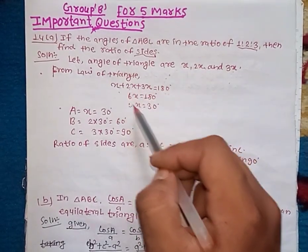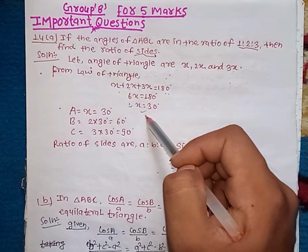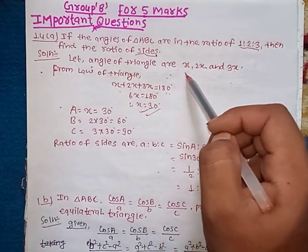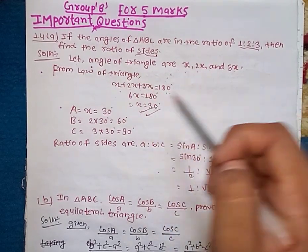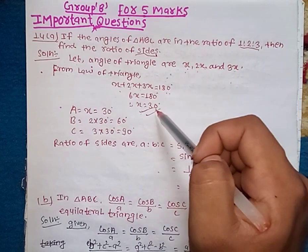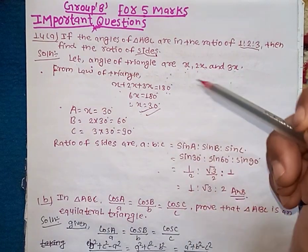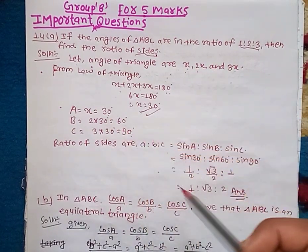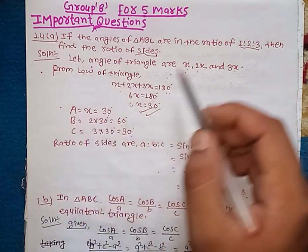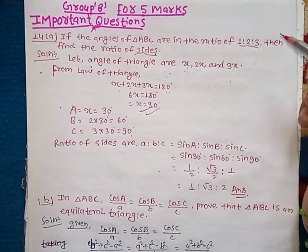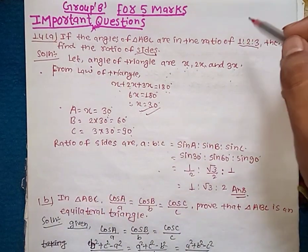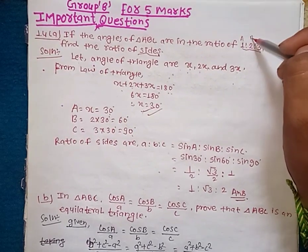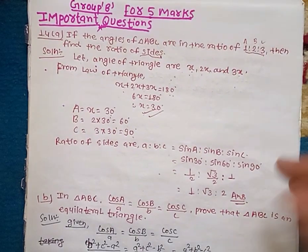So x equals to 30 degrees, or angle equals 30 degrees. So the angles are 30, 60, and 90 — this is a 30-60-90 triangle.